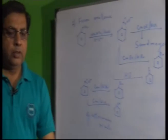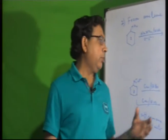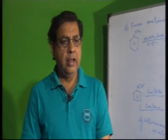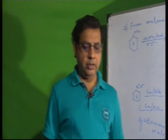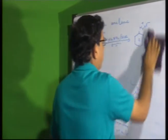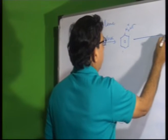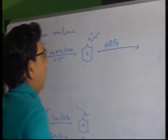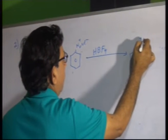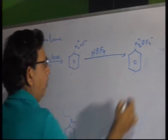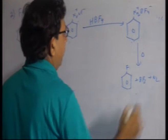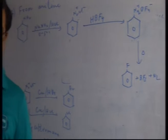Note that fluorobenzene cannot be prepared by the Sandmeyer or Gattermann methods because fluorine is a highly strong oxidizing agent that can oxidize the benzene ring and the reaction is highly violent. To prepare fluorobenzene, benzene diazonium chloride is treated with HBF4 (hydrofluoroboric acid) to form an addition compound C6H5N2⁺BF4⁻, which when heated gives fluorobenzene plus BF3 plus N2.